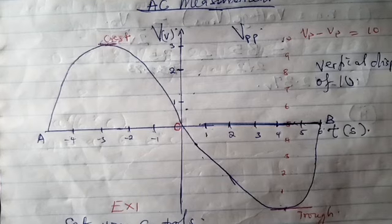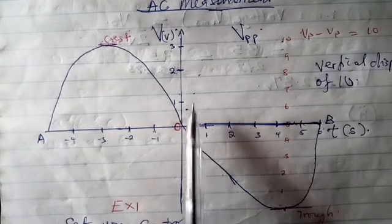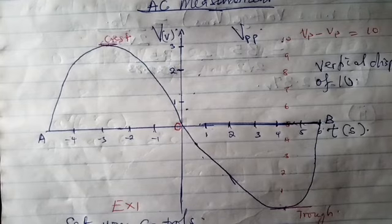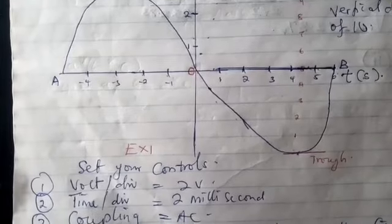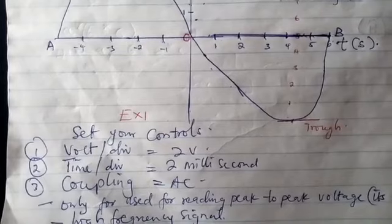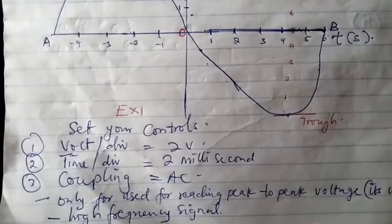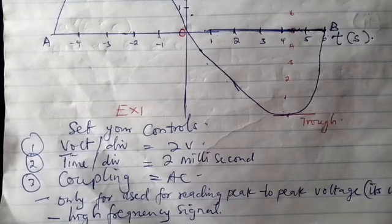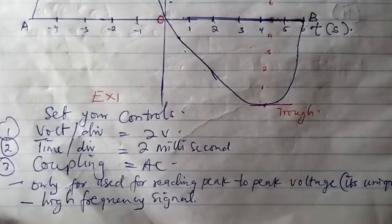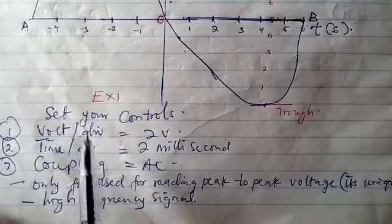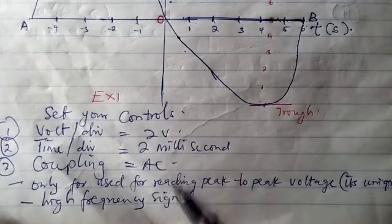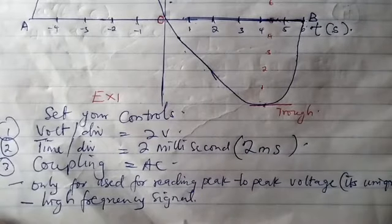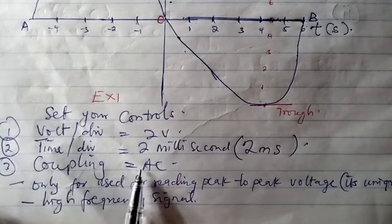Let's assume I have this and I want to measure an AC. This is what we have from an oscilloscope. Remember, I would decide to do some settings. I may decide to do this setup. I have set my controls — voltage per division as two volts, time per division as two milliseconds, and coupling set to AC, no longer DC.